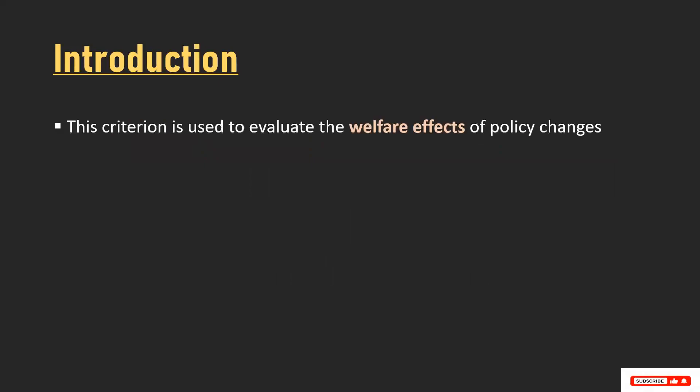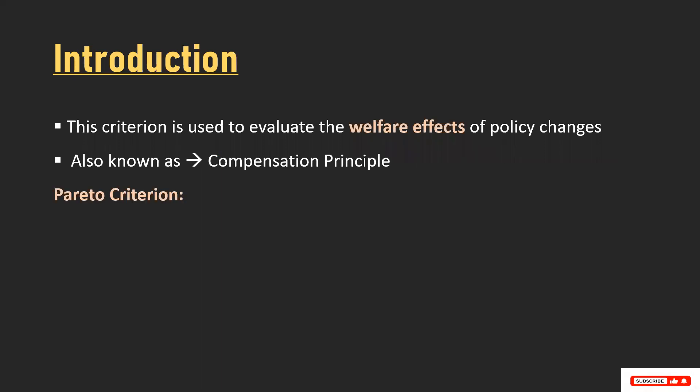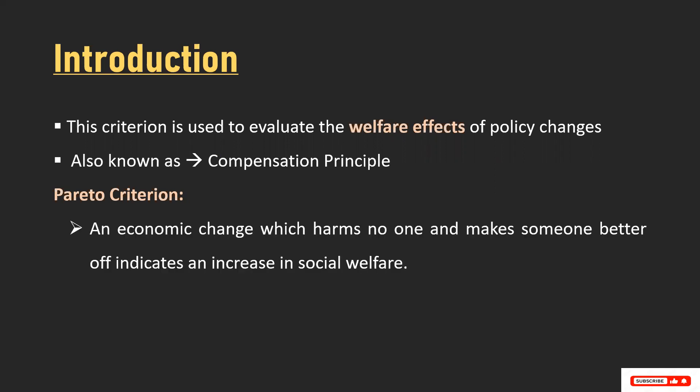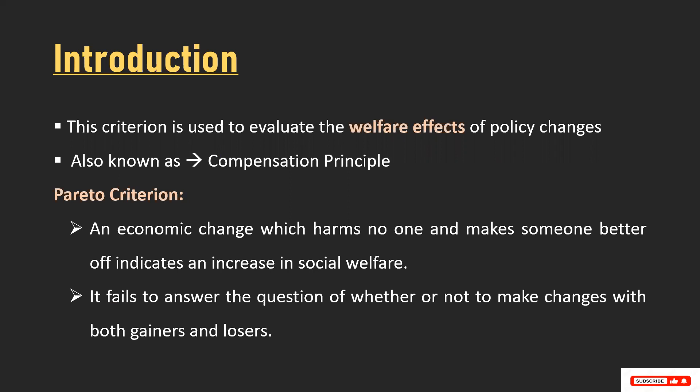Let's start with the introduction. The Kaldor-Hicks criterion is used to evaluate the welfare effects of policy changes, and it is also known as the compensation principle. Before we understand the Kaldor-Hicks criterion, we need to understand the idea of Pareto criterion or Pareto optimality. According to Pareto, an economic change which harms no one and makes someone better off indicates an increase in social welfare — meaning there is scope for improvement. But it fails to answer the question of whether or not to make changes when there are both gainers and losers; this question is not answered by Pareto.